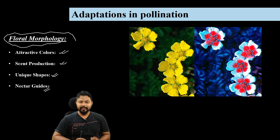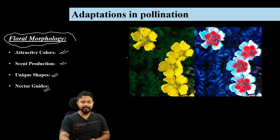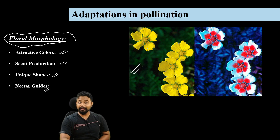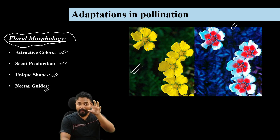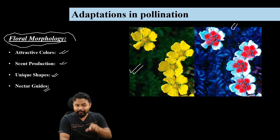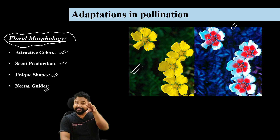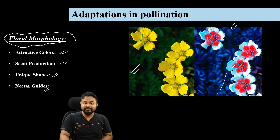So this is about flowers. If you look at this flower, you can see the nectar guide. What is a nectar guide? Nectar guides are visual patterns on the flower that help direct pollinators to the nectar source.